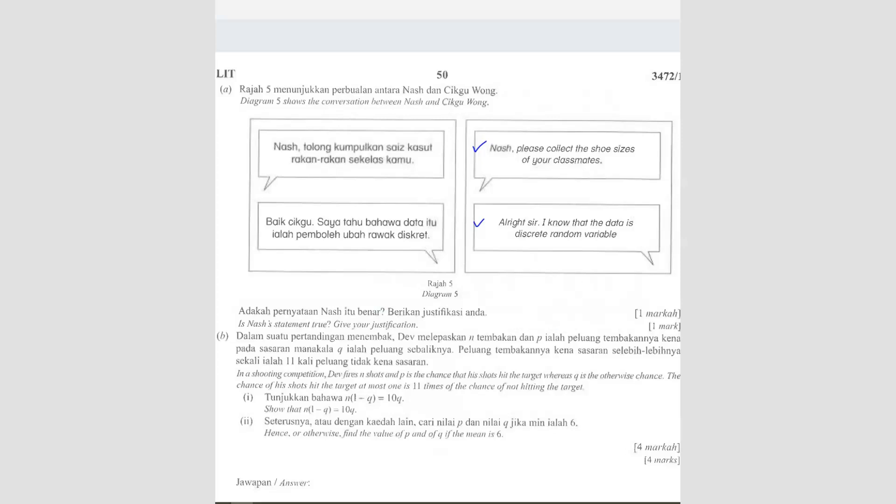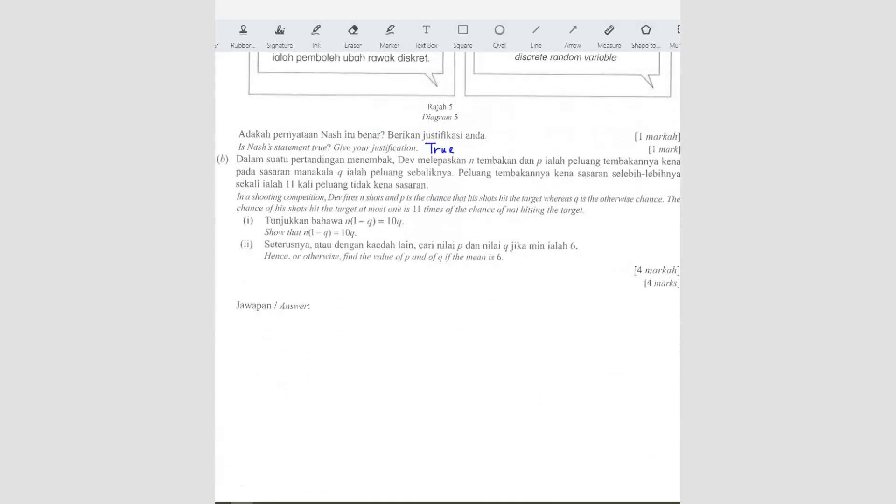So because of that, this question is actually considered true. This is considered discrete because it's either a whole number or one decimal place. So I don't know why they do it like this, but the answer here is actually true. You have to consider that as a discrete random variable.